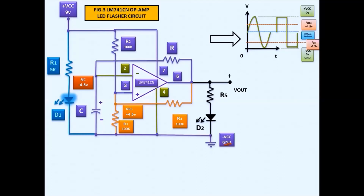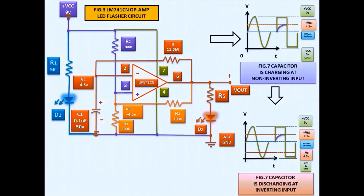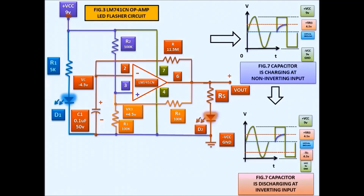The capacitor now starts charging through the non-inverting input, and this is now the waveform. When the capacitor is fully charged, it starts discharging through the negative path back to the output. That is the discharging of the capacitor at the inverting input. Oscillation occurs because of the charging and discharging effect of the capacitor. The output LED turns on because of the discharging effect of the capacitor in the circuit.